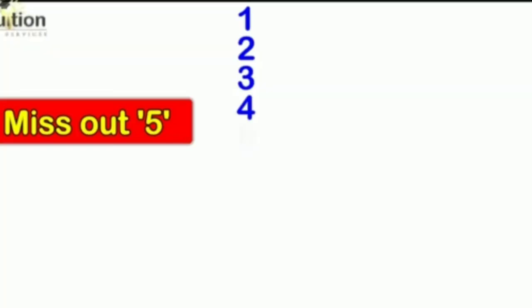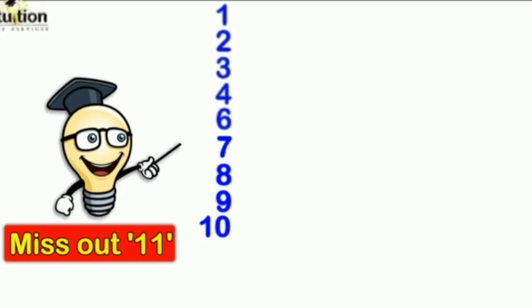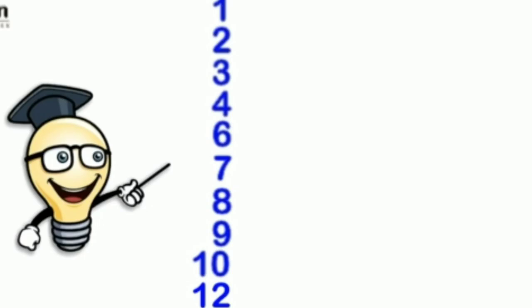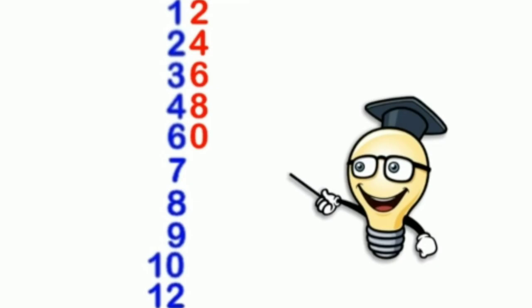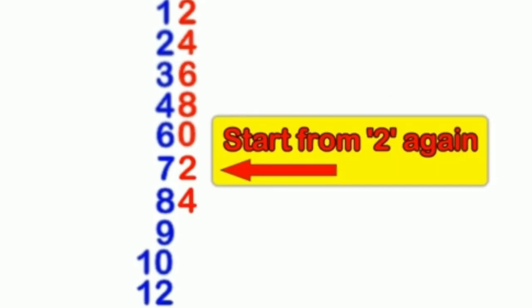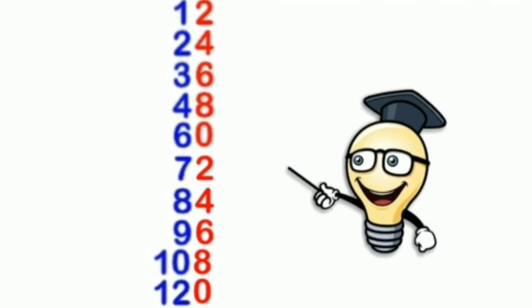First, write down the counting as 1, 2, 3, 4 — but when you come to 5, skip it. So write 1, 2, 3, 4, 6, 7, 8, 9, 10. As soon as you reach 10, skip 11 again. So the counting becomes 1, 2, 3, 4, 6, 7, 8, 9, 10, 12, 13, 14, and so on. Now for the ones place, start from 2 and write even numbers consecutively: 2, 4, 6, 8, 0. When you reach 0, start from 2 again: 2, 4, 6, 8, 0, and so on.